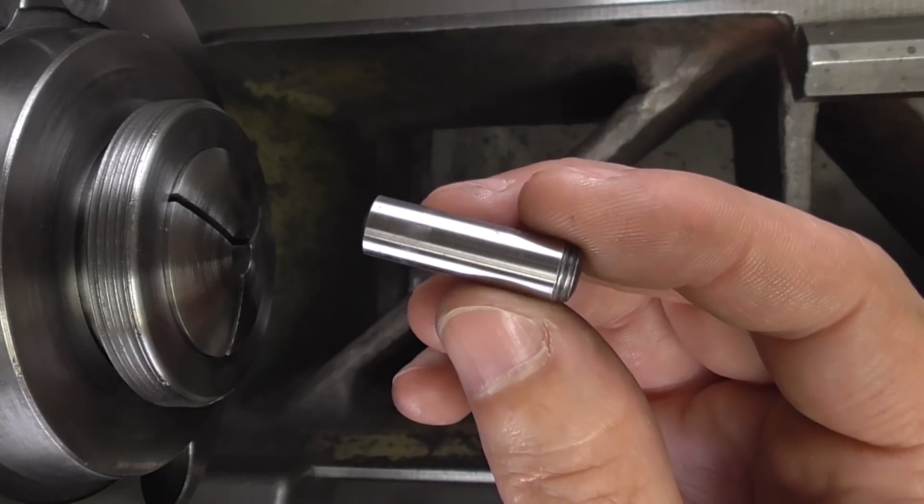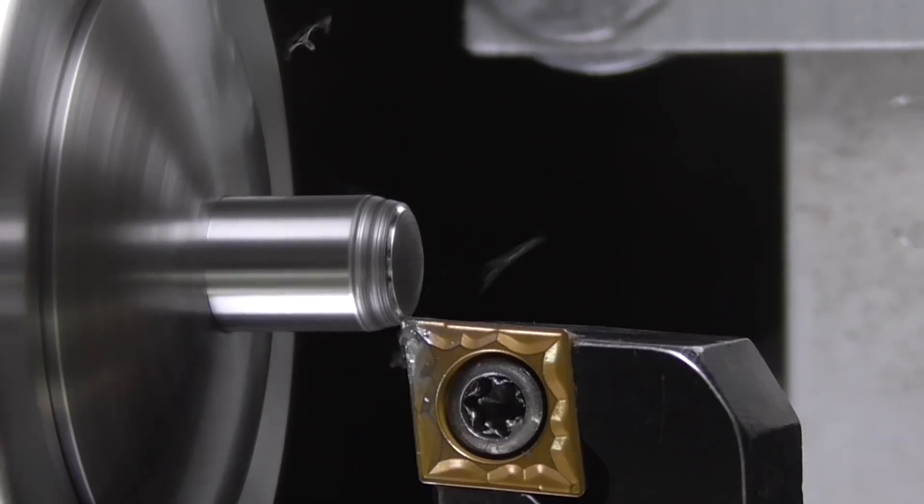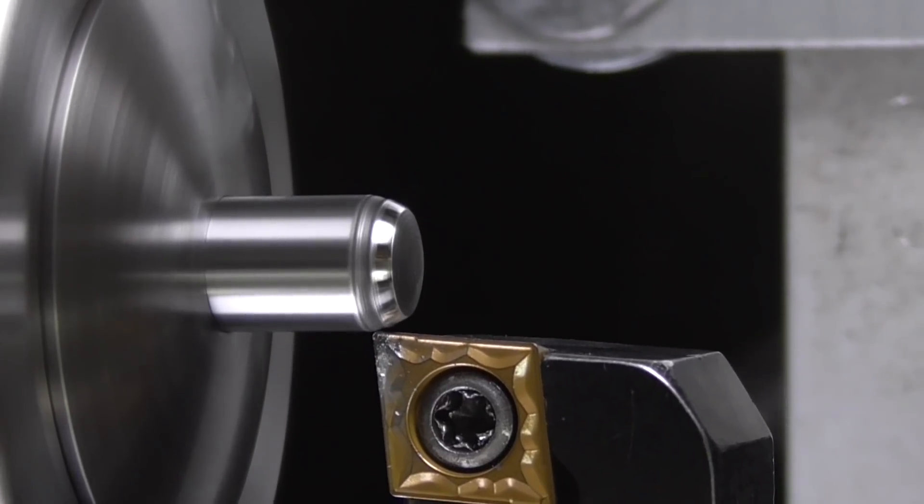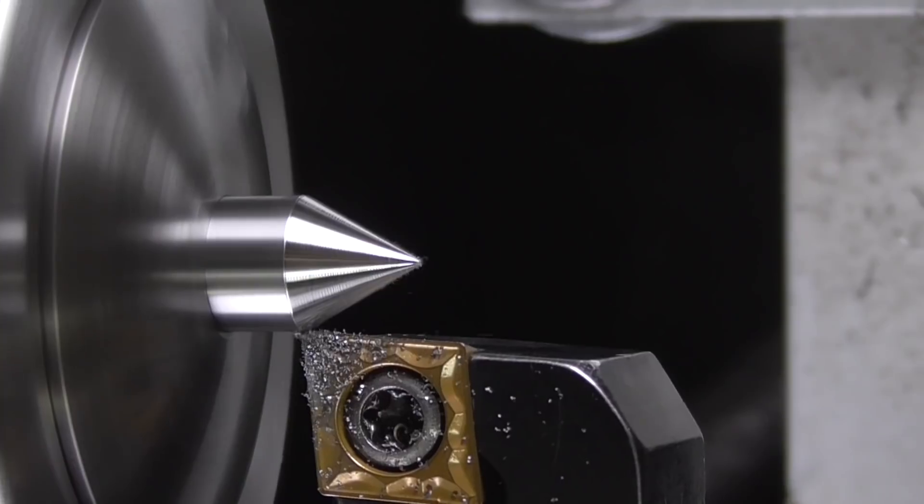First, I quickly need to make a custom center punch to mark the position of the hole on the top slide later. This is a hardened pin by the way. I'm just turning a pointy end on one side.